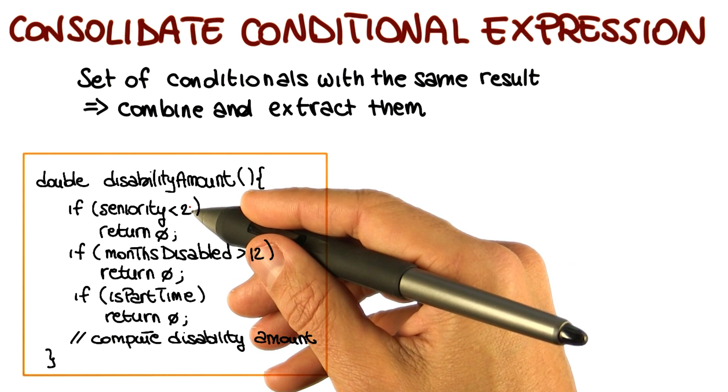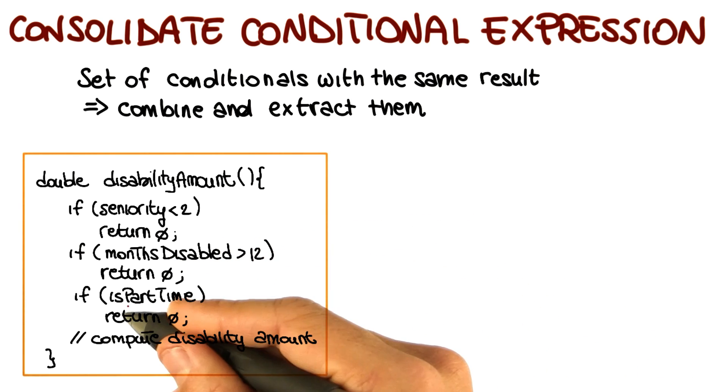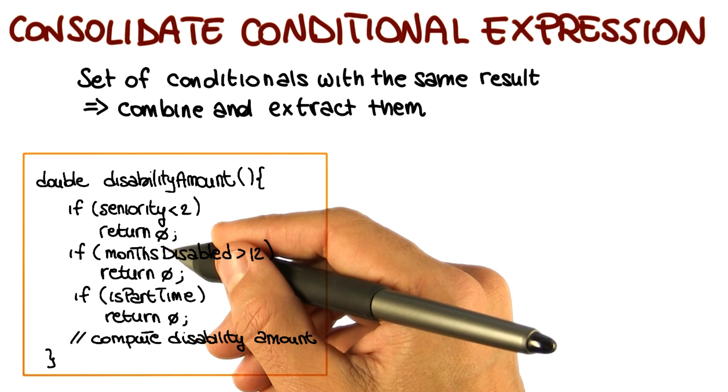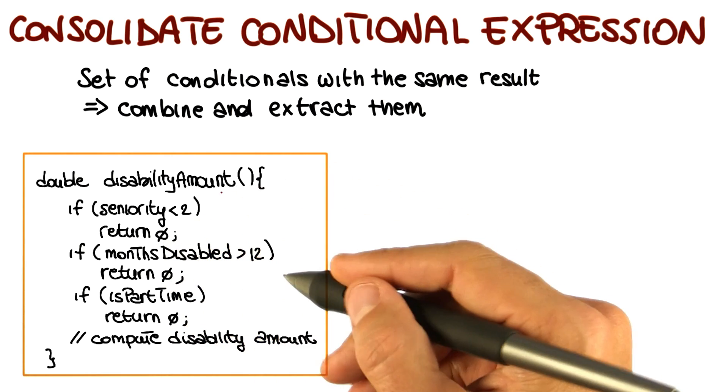For example, there's a check about the seniority level, about the number of months that the employee has been disabled so far, whether the employee is part time, and the outcome of all these checks is always the same. If they're true, if the check is satisfied, then there's no disability amount, so the disability amount is zero.